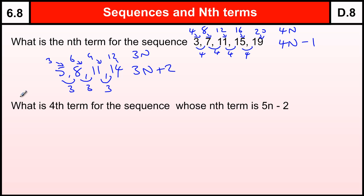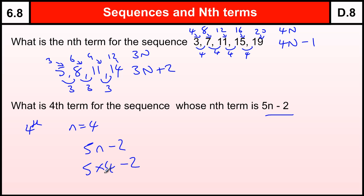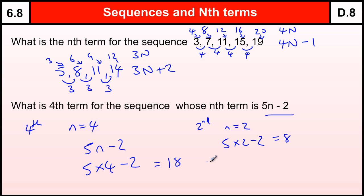Now if we are given an Nth term, how do we work out a particular term of the sequence? If I want the fourth term, that's telling me N equals 4, so I just replace the N in the sequence 5N minus 2 with a 4. That's 5 times 4 minus 2 — 5 times 4 is 20, take away 2 is 18. If I wanted the second term, N would be 2: 5 times 2 take away 2, which is 8. If I wanted the 21st term, N would be 21: 5 lots of 21 take away 2 — 5 lots of 21 are 105, take away 2 is 103.